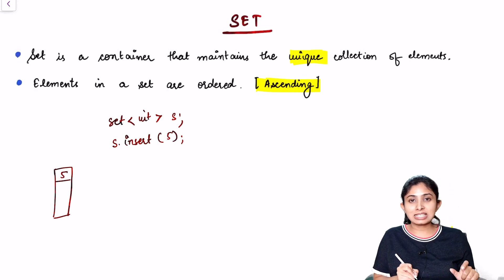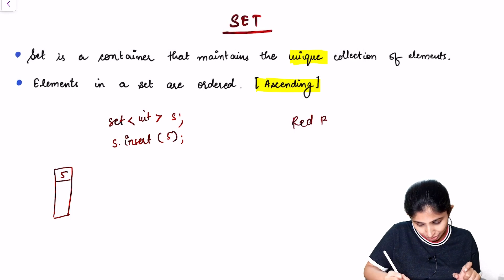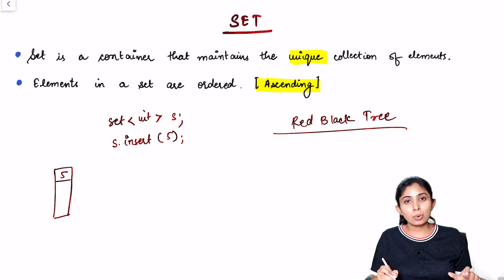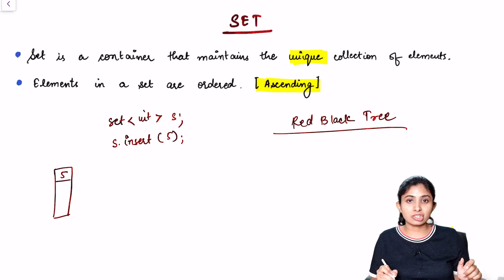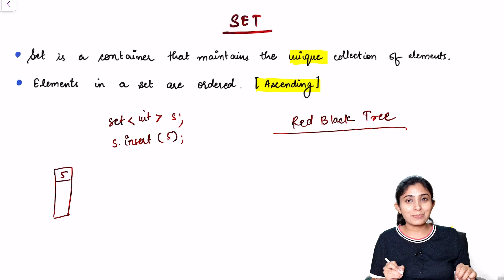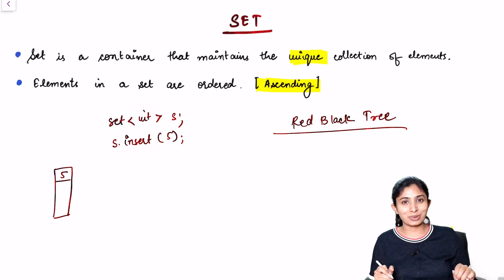Internally, sets are implemented using the red-black tree. Red-black trees are balanced binary search trees. So all operations in sets — such as insertion, deletion, or searching — are of order O(log n). Let's see the complete implementation of all these operations using our code.